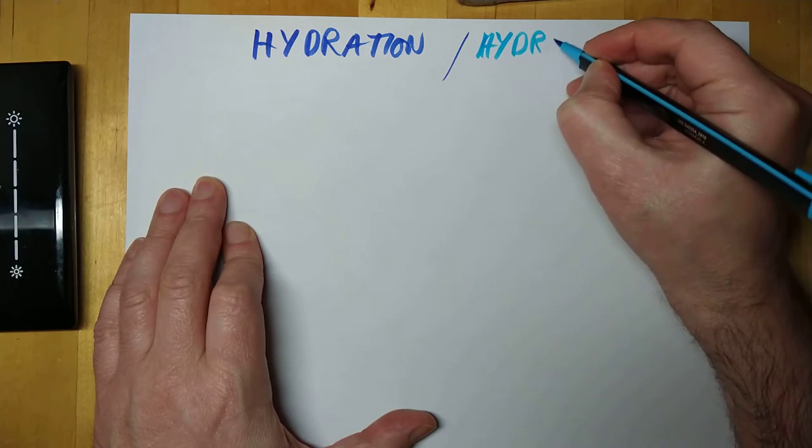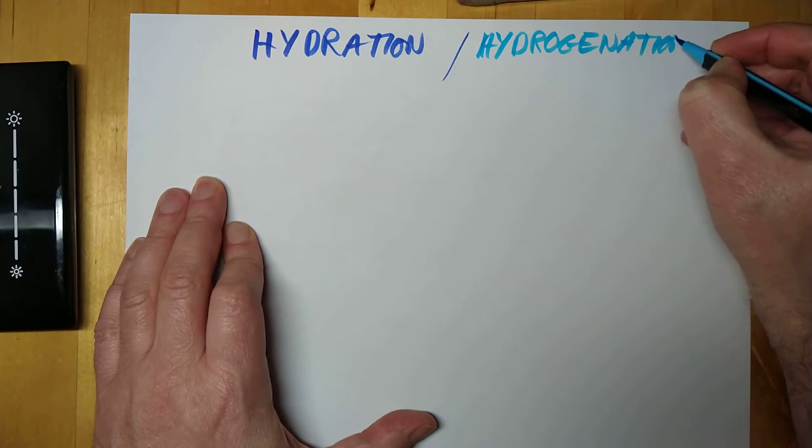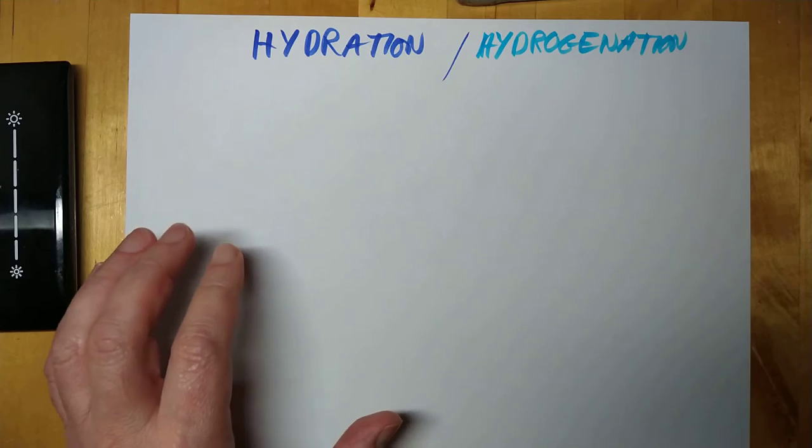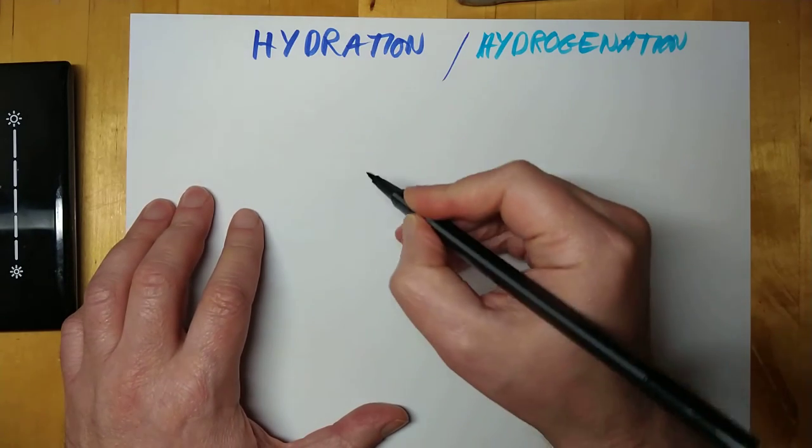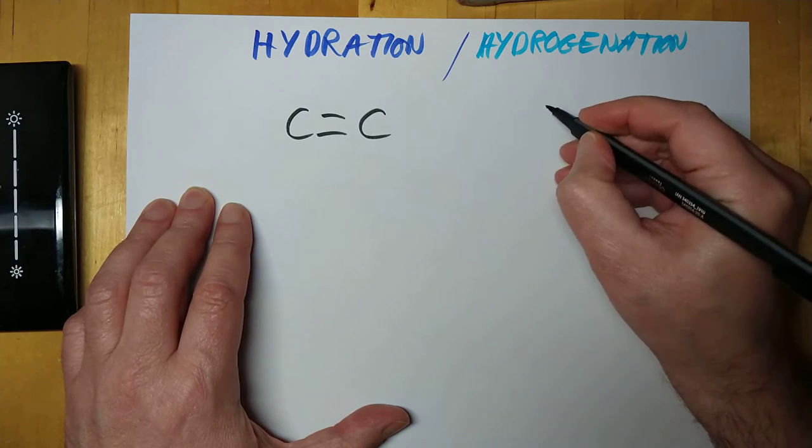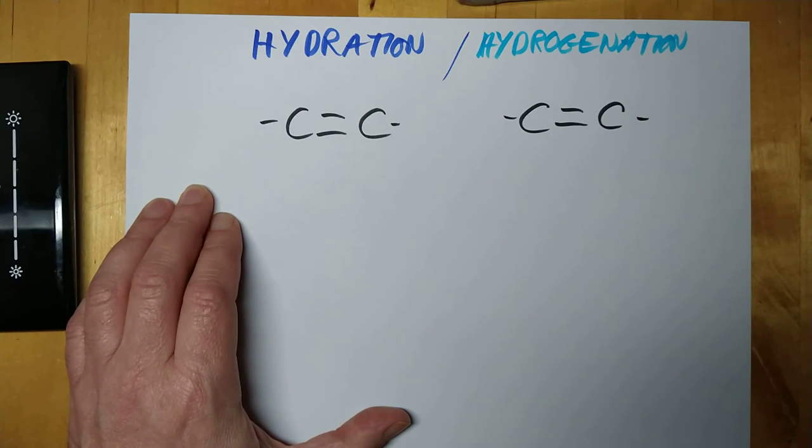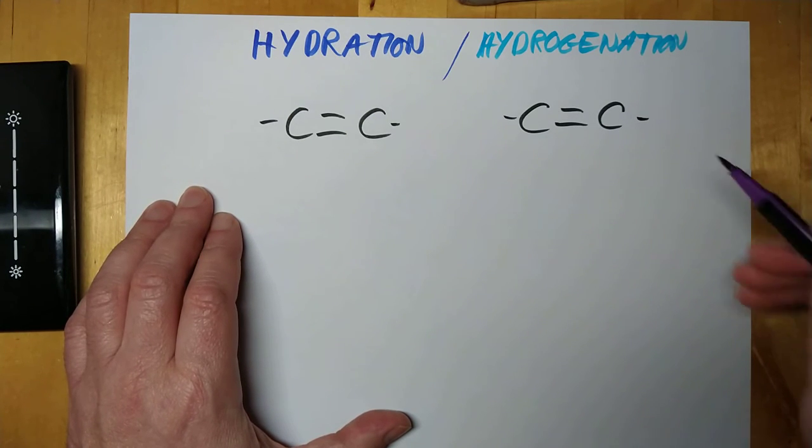We'll just have a look at these brothers here. Hydration and hydrogenation now. The colours we had were dark blue for hydration. Hydration and hydrogenation, as I said, are brothers in that they are examples of the same type of reaction. They are examples of addition reactions.